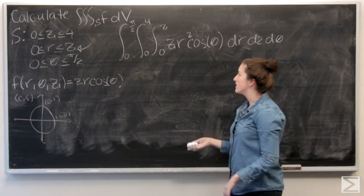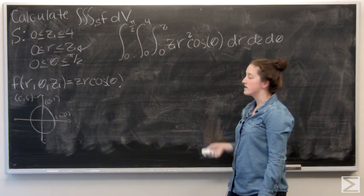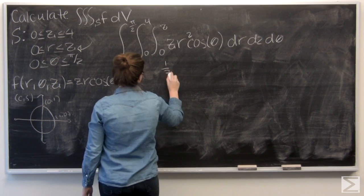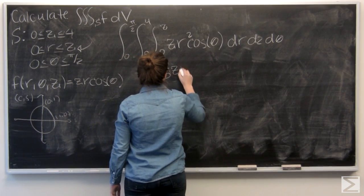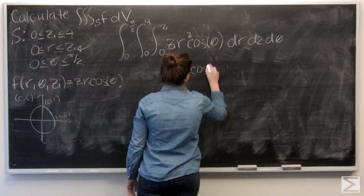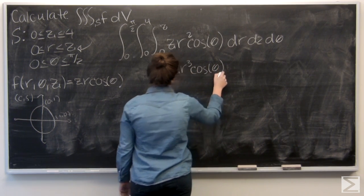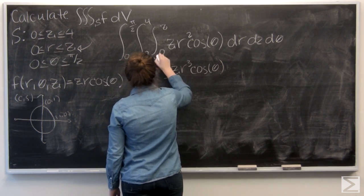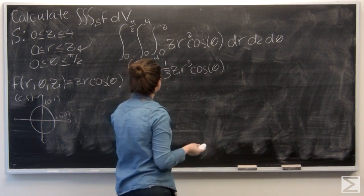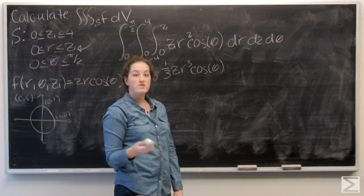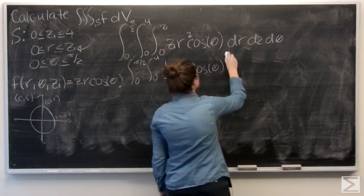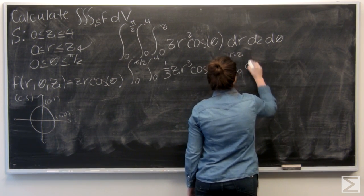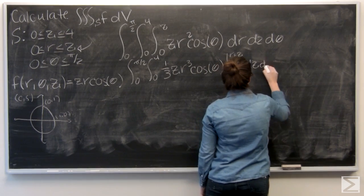So we're integrating with respect to r first. I've got an r squared in there, so that means I'm going to get one-third r to the third. And I want to evaluate that from r equals 0 to r equals z, and then dz, d-theta.